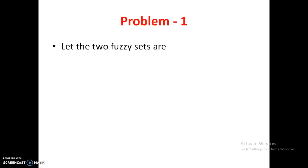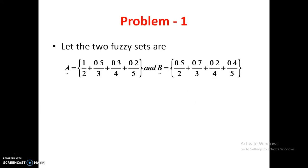The first problem is like this: let us take two fuzzy sets A and B. As we have already discussed, the representation of a fuzzy set has the membership value in the numerator and the element in the denominator. For A: at 2 the membership value is 1, similarly 3, 4, 5. For B: at 2 the membership value is 0.5, at 3 it is 0.7, at 4 it is 0.2, and at 5 it is 0.4.